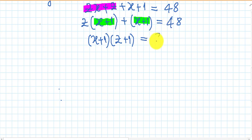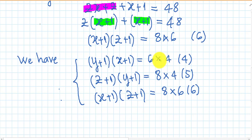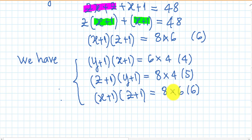I can write 48 as 8 multiplied by 6. So we now have three factored equations: x plus 1 times y plus 1 equals 6 times 4, and z plus 1 times y plus 1 equals 8 times 4, and x plus 1 times z plus 1 equals 8 times 6.